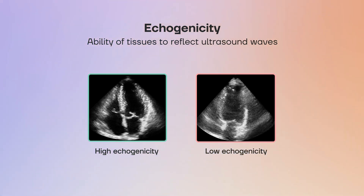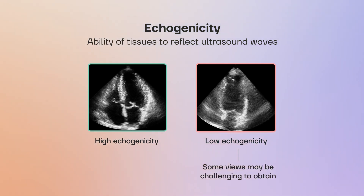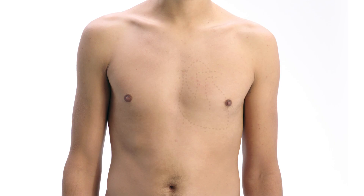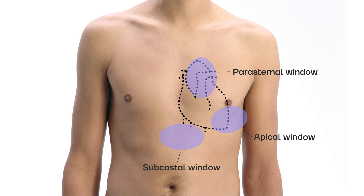When performing an exam on a patient with poor echogenicity, some views may be challenging to obtain. Still, it is very rare to get no image at all. The goal of cardiac ultrasound is to capture short clips of some reference views — standardized images showing key heart structures. There are several reference views distributed in three windows: the parasternal window, the apical window, and the sub-costal window.